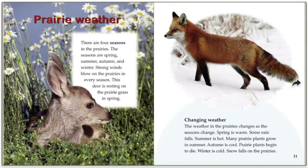Prairie weather. There are four seasons in the prairies: spring, summer, autumn, and winter. Strong winds blow in the prairies in every season. This deer is resting on the prairie grass in the spring. Weather in the prairies changes as the seasons change. Spring is warm and some rain falls. Summer is hot and many prairie plants grow. Autumn is cool and prairie plants begin to die. Winter is cold and snow falls on the prairies.